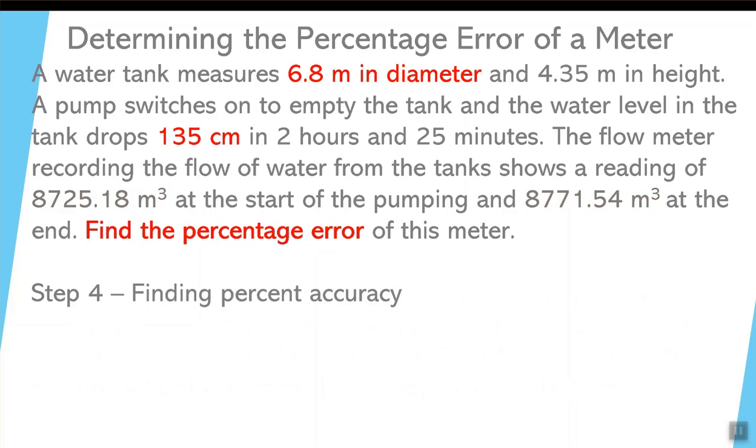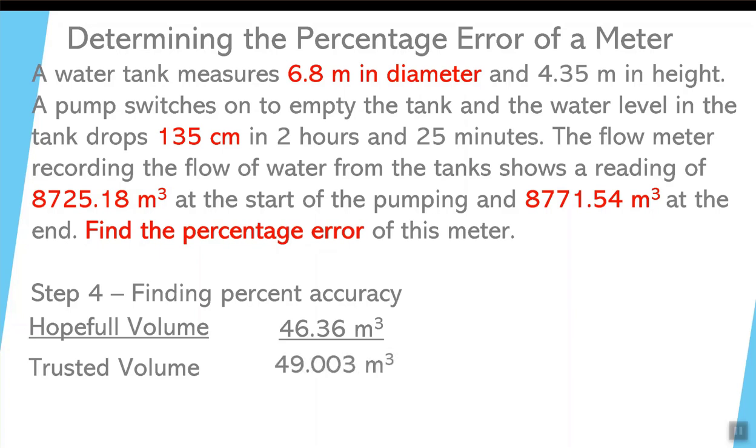Now we take a look at the percentage accuracy. And for this particular calculation, we take a look at what we hoped the volume was by going through the starting and ending reading of the meter, and that was 46.36 cubic meters. And we compare that or divide that by the volume that we had earlier calculated based on the diameter and the height of the water. That was 49.003. So those two numbers will tell us how close our meter is to perfection. Now this is a percentage value, and it works out to about 94.61% accuracy. So that's 94%, not too bad.